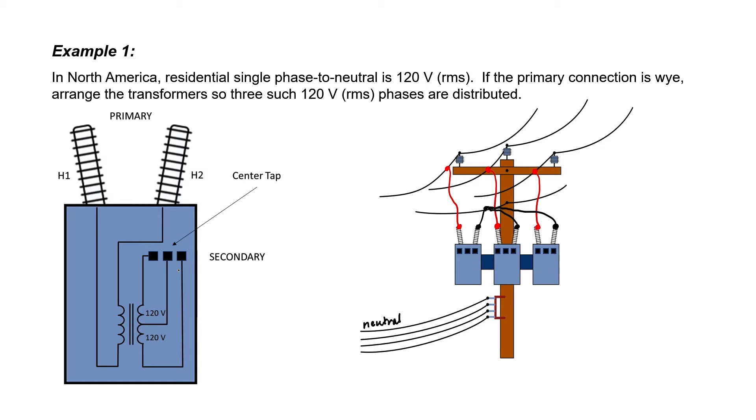If we look over here at our diagram for the transformer, we can see that we have 240 volts across the secondaries of this transformer, and we have 120 volts RMS between the center tap and either of the other two secondaries.